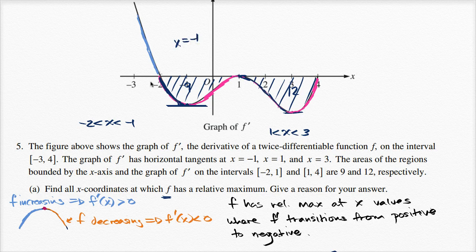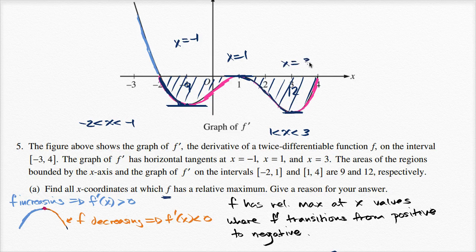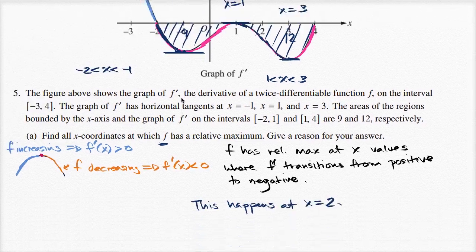So that happens at x equals negative one. And over here, f' starts increasing, but then right at x equals one it starts decreasing. So at x equals one we have another point of inflection — that's where the tangent line would have slope zero. And then we're decreasing, decreasing, decreasing, then increasing. So this is going to be another point of inflection at x equals three. So these are our three points of inflection.